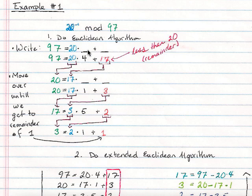This number out here is the remainder. So 97 divided by 20 is 4 with the remainder of 17. I put less than 20 because it's the remainder. So we want to write it as 97 equals 20 times 4 plus 17.